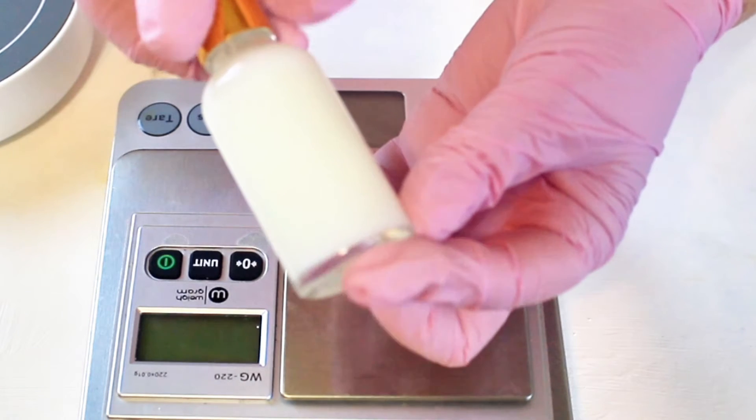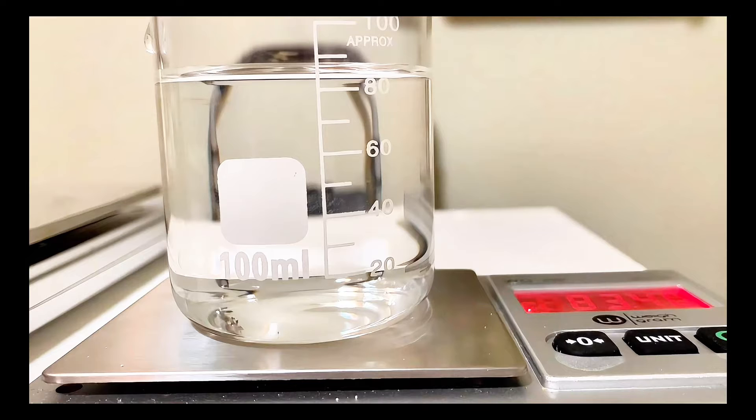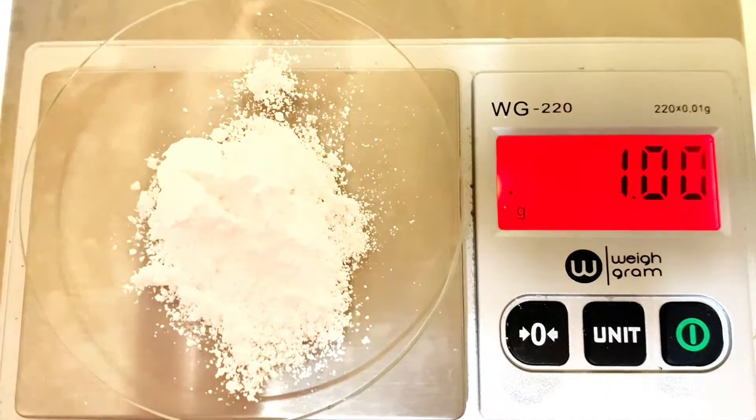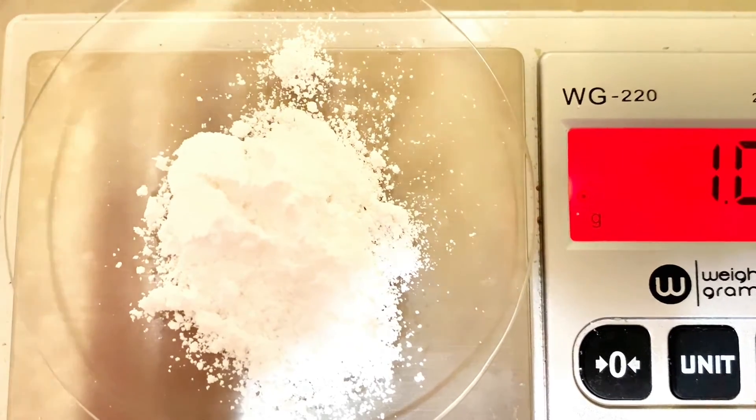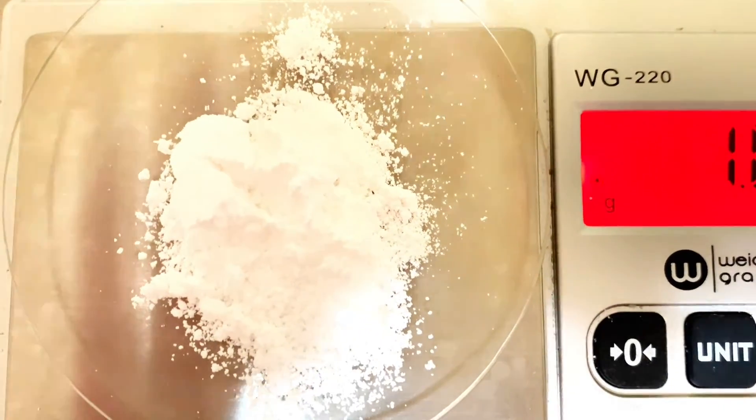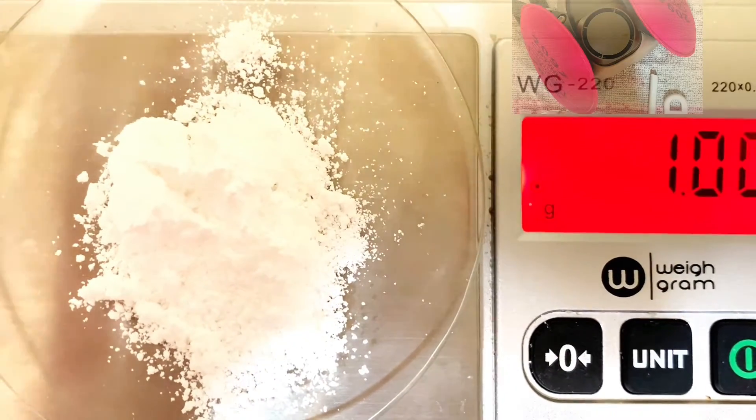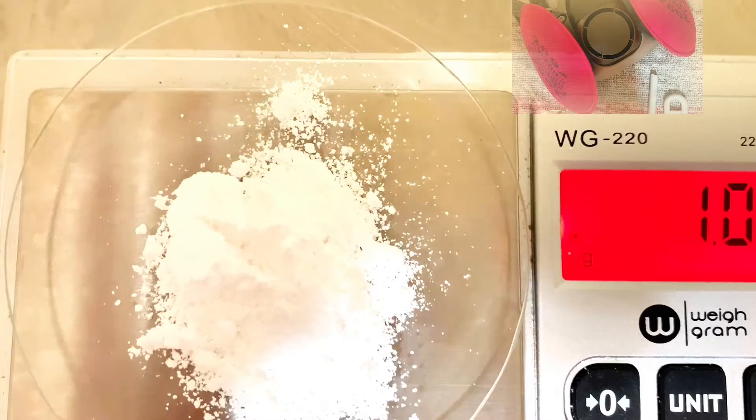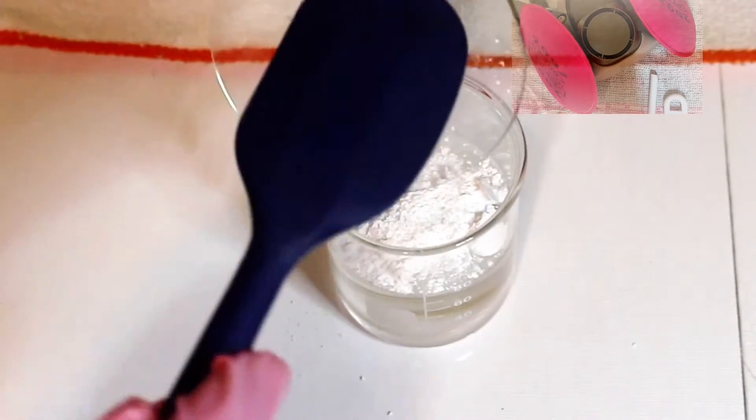First I measure out 81.35 grams of distilled water. Then I weigh out one gram of Sepimax Zen. This is going to give us our gel consistency. Please use a respirator when you're measuring out this ingredient. Transfer it over to the beaker that has the water in it, and then I'll stir it up and get it wet.